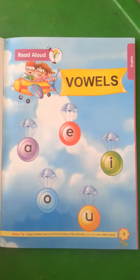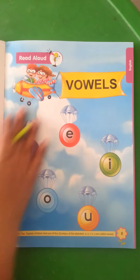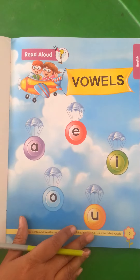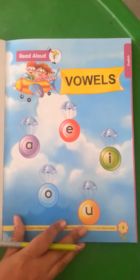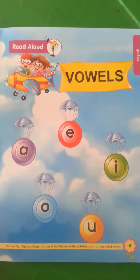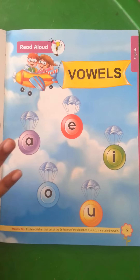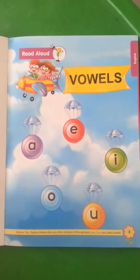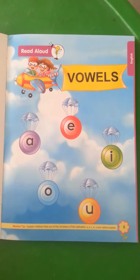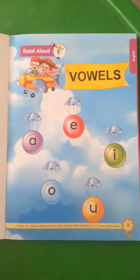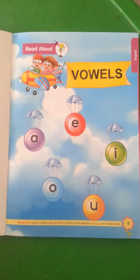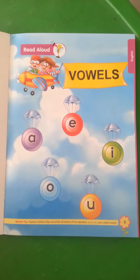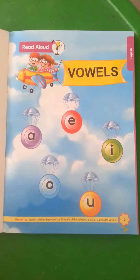Now, what are vowels? What are vowels? They are not consonants. It means A, E, I, O, U — they give letters a sound. They complete it. You understand? Like B — 'bang'. If I use B and G, then there will not be a meaning.